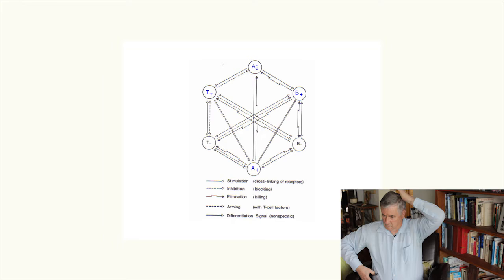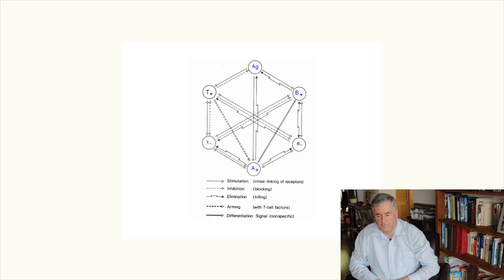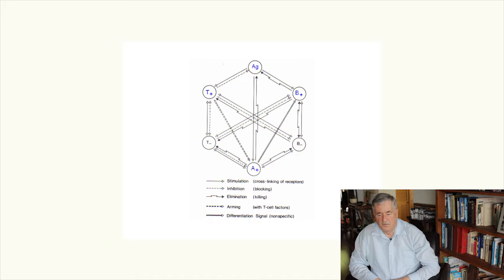The antigen stimulates T plus and the T plus cells secrete specific T cell factors which then bind to the A cell surface. The antigen can cross-link a receptor on the A cell population. And as a result of that, the A plus population secretes the differentiation factor that binds to the B plus population. In the meantime, the antigen has also been stimulating the B plus population and the B plus population has been proliferating in response to that stimulation. And it's also expressing a receptor for a non-specific differentiation factor coming from the A cell to the B cell.